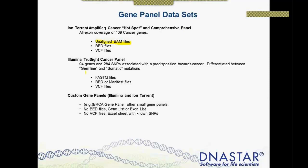Illumina also has panels — today we'll look at a TruSeq cancer panel: 94 genes and 284 SNPs. Illumina differentiates between germline and somatic mutations, produces BED files — sometimes called manifest files — their data is in FASTQ format, and they will also have a VCF file. Similar but not exactly the same as Ion Torrent. Many of you may also be doing custom gene panels — it might be a small panel targeting one gene like BRCA, or a set of genes where you've designed your own panel.